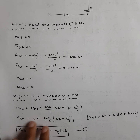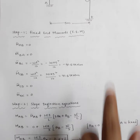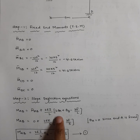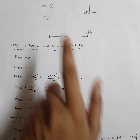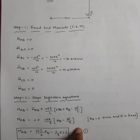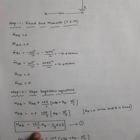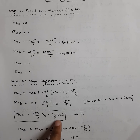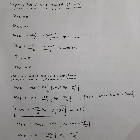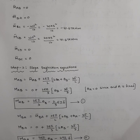For MAB: M-bar AB is zero, plus 2EI/3 (span of AB is 3). Theta A is zero because end A is fixed. So MAB = (2EI/3)·θB − (2EI/3)·(delta/3), which simplifies to MAB = (2EI/3)·θB − (2EI·delta)/3. This is equation number 1.